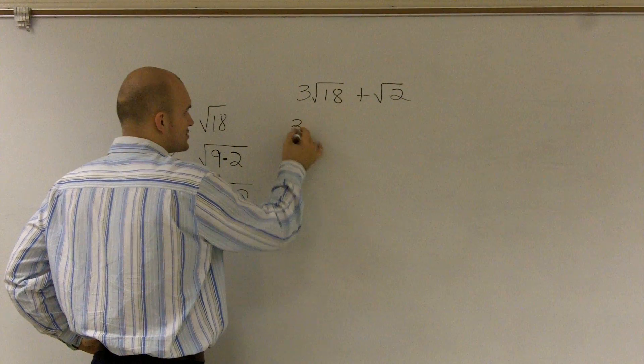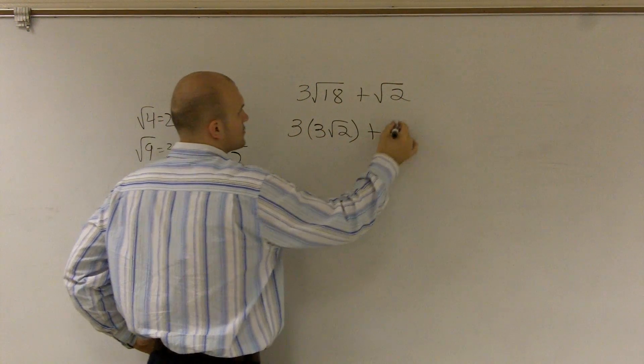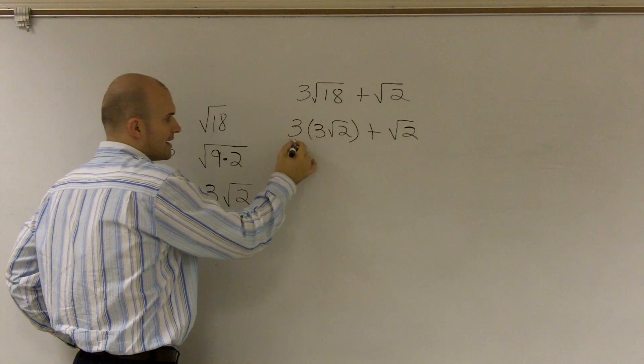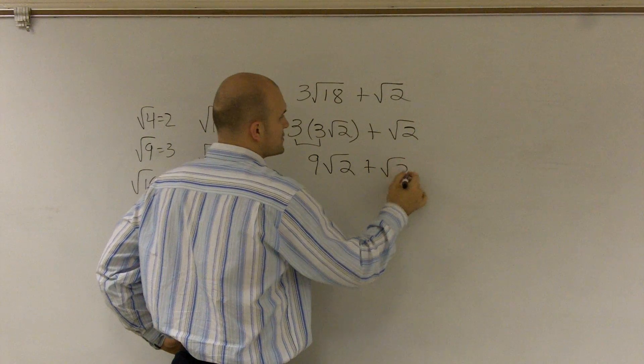So therefore, my real answer is 3 times 3 square root of 2 plus the square root of 2. Well, now I can multiply these two numbers. So I get 9 square root of 2 plus square root of 2.